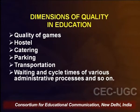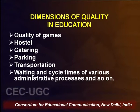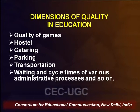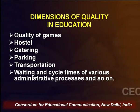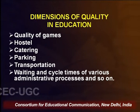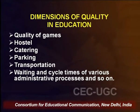When talking about institutional service dimensions, we can give examples such as quality of games, hostel facilities, catering, parking facilities, transportation, and the waiting times and cycle times of various administrative processes. These dimensions are very pertinent in giving an edge to an institute as far as quality in education is concerned.